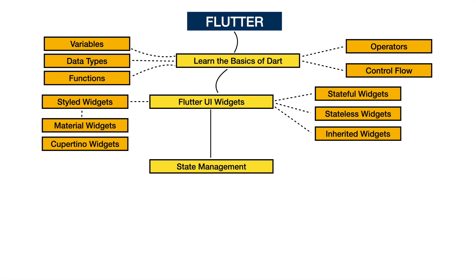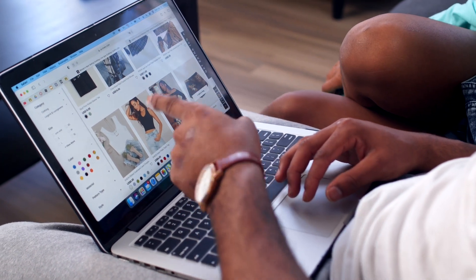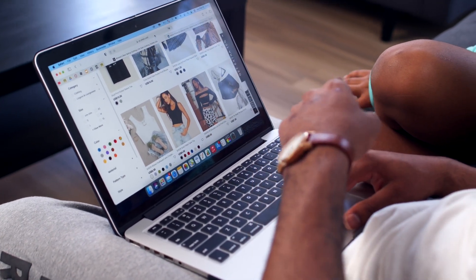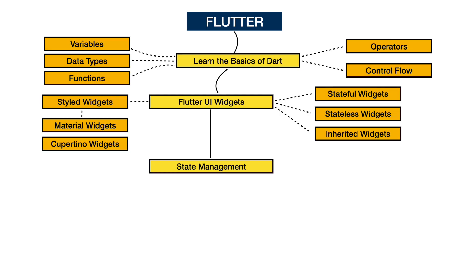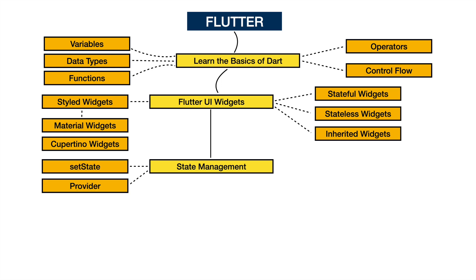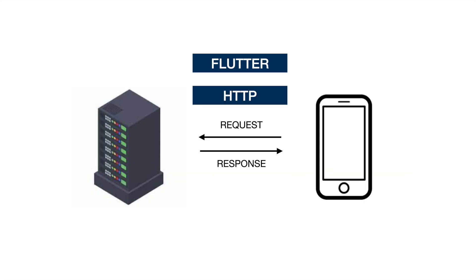Next is Flutter state management. State management in Flutter refers to managing and updating the data or state in a Flutter application. Widget state can change dynamically — for example, in an e-commerce app, an item added to the cart is stored in state so that the data persists when you navigate to different screens. Explore different approaches: setState for simple cases, Provider for more advanced scenarios, Bloc for managing complex app states, and Riverpod as an alternative to Provider.